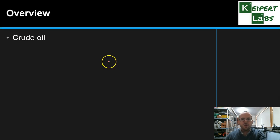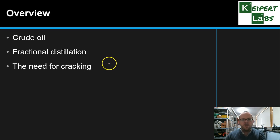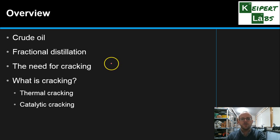So as ever let's begin with an overview. In this video we're going to go through thinking about crude oil, the natural material that we use as the basis of many materials. We're going to think about how we can extract useful components out of crude oil by the process of fractional distillation, and then looking at the need for cracking of the different fractions we get from crude oil, and the two types which are thermal and catalytic cracking.